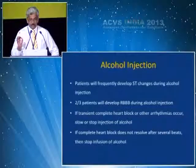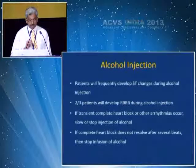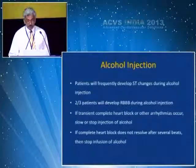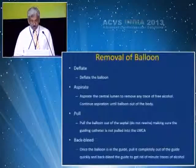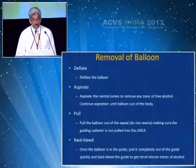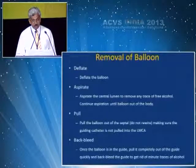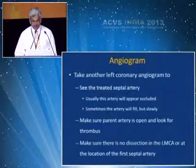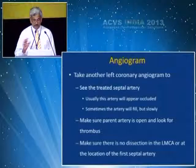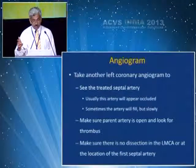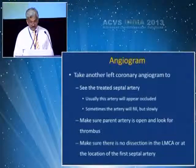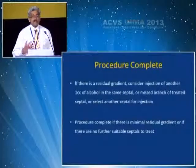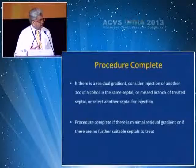Patients will develop pain and ST-T changes during alcohol ablation. Two thirds of patients will develop RBBB. If incomplete heart block occurs, slow the alcohol injection. If complete heart block does not resolve, stop the infusion of alcohol, deflate the balloon, aspirate the central lumen to remove any free trace of alcohol, pull the balloon out of the septal, and do not rewire. Ensure the guiding catheter is not pulled into the left main — back-bleed so all alcohol slips back. After the procedure, take an angiogram to confirm the treated septal artery, ensure the parent artery is open, look for thrombus, and confirm there is no dissection in the left main or at the first septal artery. Normally use about 1cc of alcohol at a time.